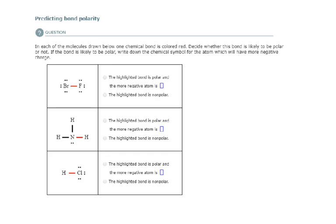The second example has a molecule with bromine and fluorine atoms. The bond between these two atoms is represented here in red, and we're asked to predict the bond polarity.